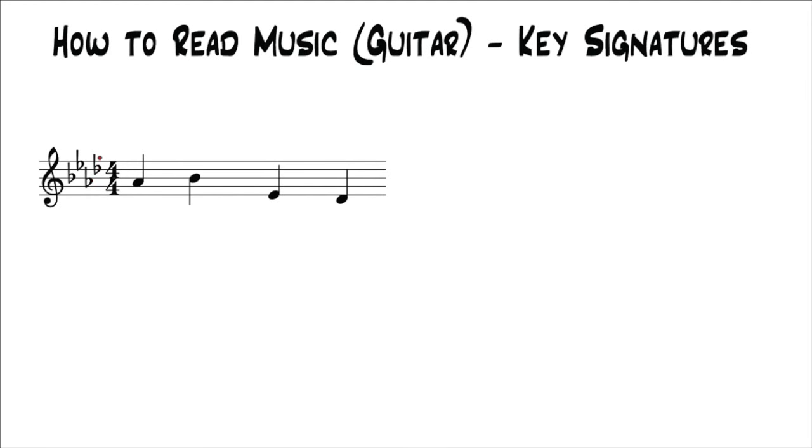Or if we were to look at a flat key, this is saying that all of these notes written right here are flats. This is on the B line, so that means all Bs are flat. This is in the E space, so all Es are flat. This is in the A space, so all As are flat. And this is on the D line, so all Ds are flat.